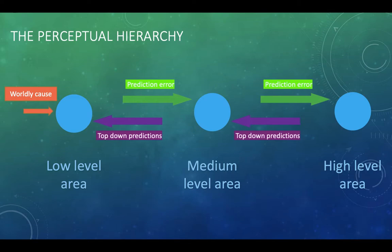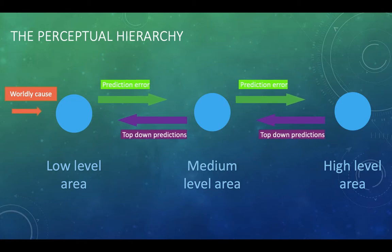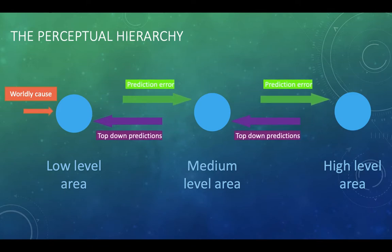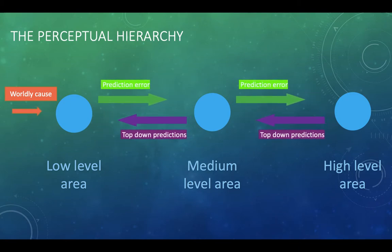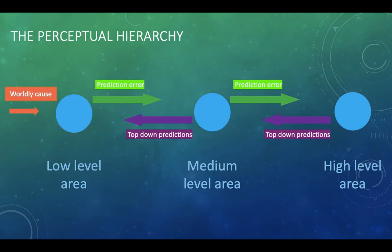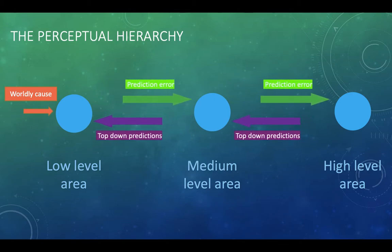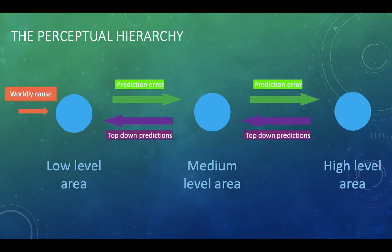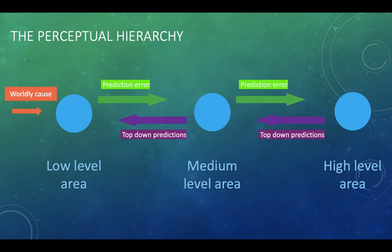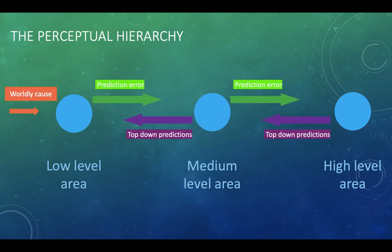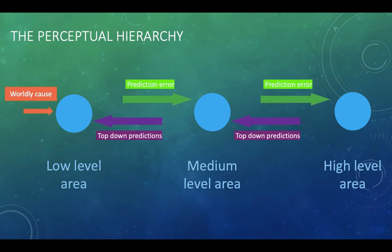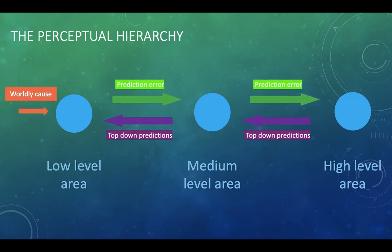So in this video we're going to be talking about the perceptual hierarchy and this is sort of working out a bit more of the detail about how predictive processing might work in the brain. So what I've got is a simplified hierarchy which shows worldly cause. Let's just talk about the visual system because it's the paradigm case. Worldly cause could be sunlight hitting the photoreceptors in the retina. And then what we have here is this two way flow. We've got prediction errors going up the hierarchy from low levels to high areas. And then we have top down predictions coming from high levels down to low levels.